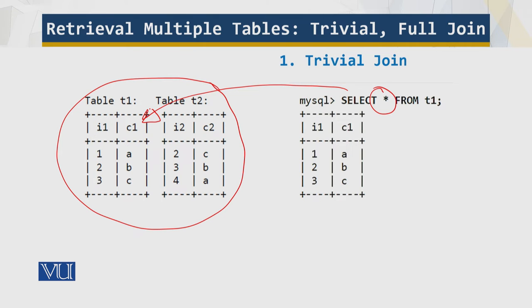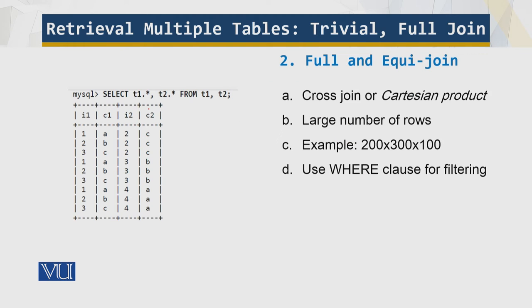Now let's look at full and equi-join, which is on the next slide. So how do we go about it? So what we have, which is called as a cross join or a Cartesian product. So where is the join? Over here is the join.